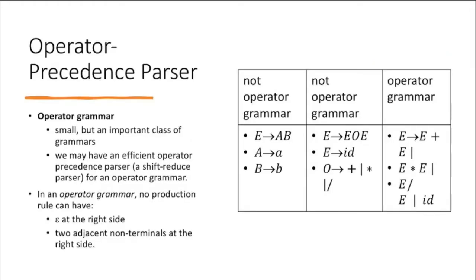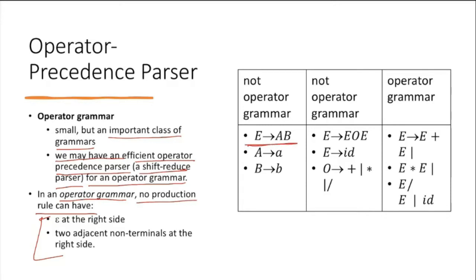Operator grammar is a small but important class of grammar. We may have only an efficient operator precedence parser — a shift-reduce parser — for an operator grammar. In an operator grammar, no production rule can have these two things: no epsilon on the right-hand side, and no two adjacent non-terminals.